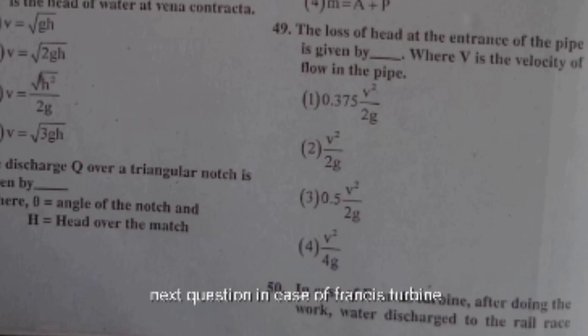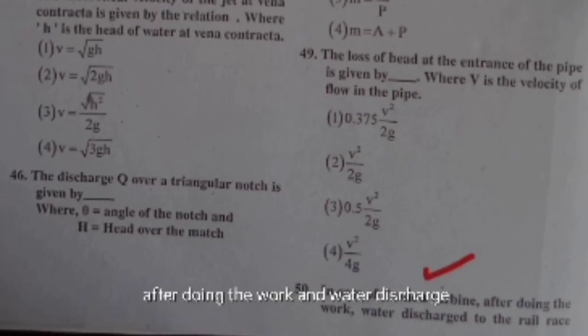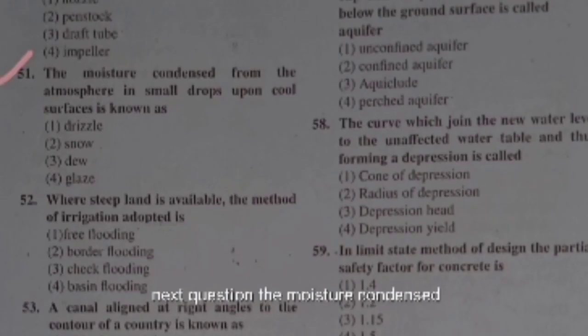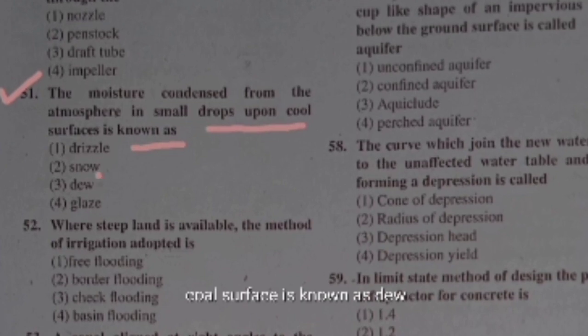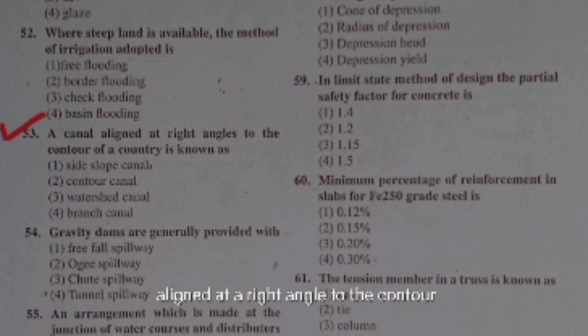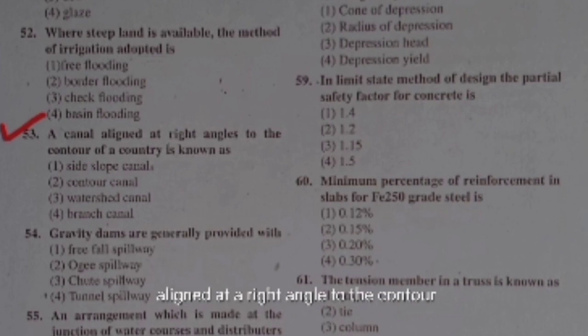In the case of a Francis turbine, after doing work, water is discharged to the tail race through a draft tube. Moisture condensed from the atmosphere in small drops upon a cool surface is known as dew. Where steep land is available, the method of irrigation adopted is free flooding.